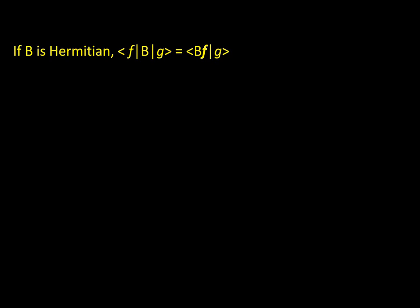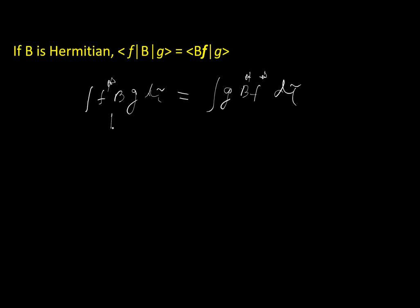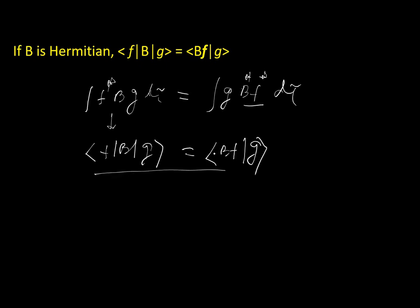For a Hermitian operator B: ⟨f|B|g⟩ = ⟨B|f|g⟩*. This comes straight from the definition: for Hermitian B, ∫f* B g dτ = ∫g B* f* dτ. So ⟨f|B|g⟩ equals ⟨Bf|g⟩* — the thumb rule is that for a Hermitian operator you just bring B towards the left. That is the usual thumb rule.